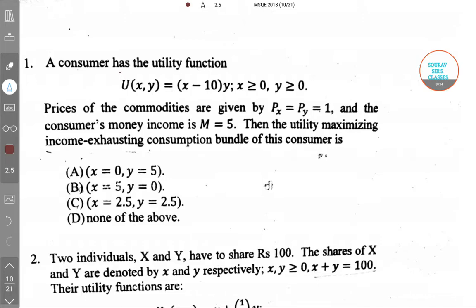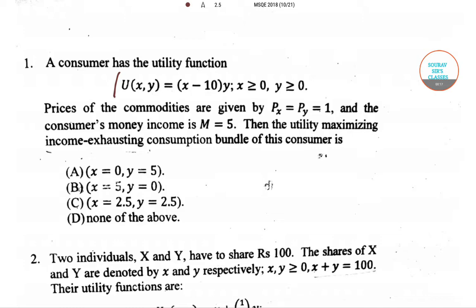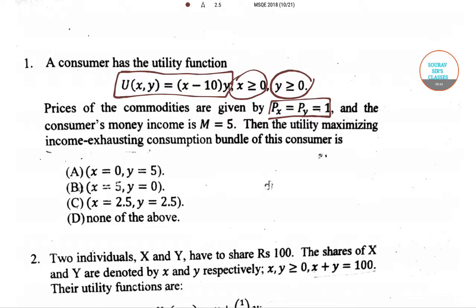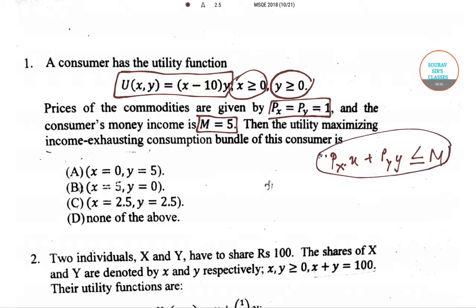We are given a utility function u(x,y) = (x-10) times y. There are several constraints to maximize this utility function. The first constraint is x must be non-negative, the second is y must be non-negative, and the third is our budget constraint: px times x plus py times y is less than or equal to m, where px = py = 1 and income m = 5.